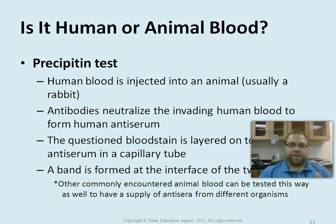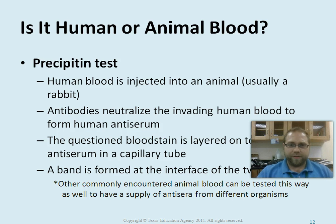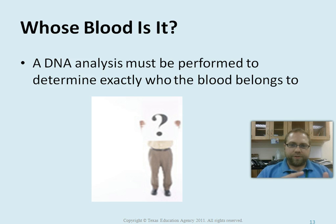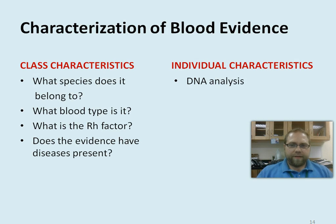The precipitin test answers the second question: is it human or animal blood? You take human blood and inject it into an animal — usually a rabbit — and the antibodies will neutralize it to make a human antiserum. You then put that together with the blood sample in a capillary tube, and if a band forms at the surface, it tells you whether the blood is the same type or different. For the third question — whose blood is it — you use DNA analysis to determine that. When characterizing blood evidence, class characteristics include: what species it belongs to, blood type, RH factor, and whether any diseases are present. Individual characteristics come down to DNA — just finding blood doesn't tell you whose it is until you do a DNA analysis.